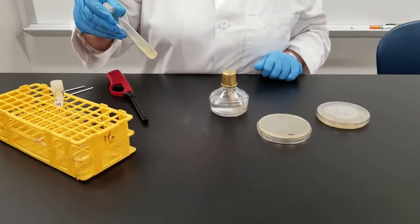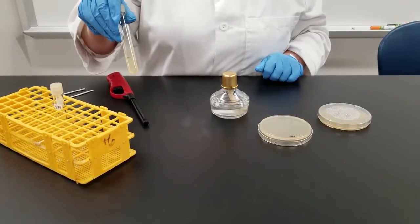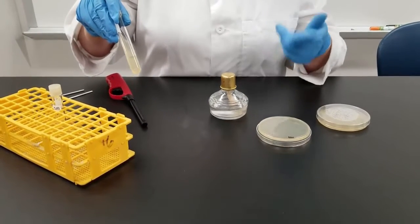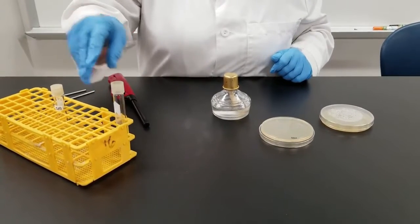Sometimes we will grow them on what we call a slant, where you've got the agar. In the agar you can make different types of nutrients added to it. So this would be a slant and you can inoculate that.